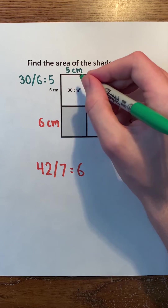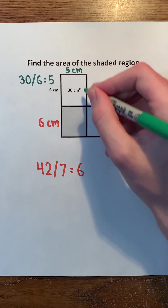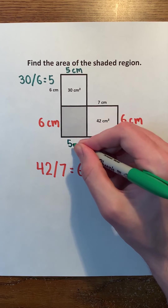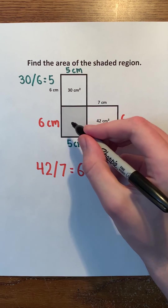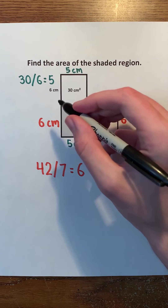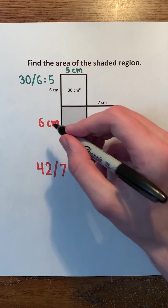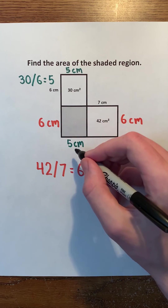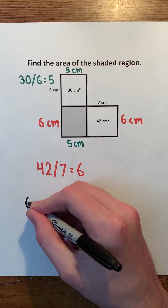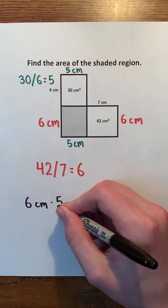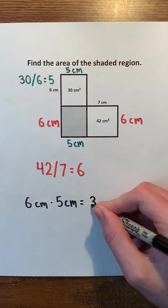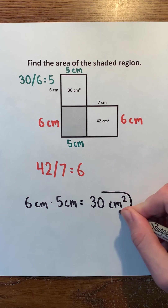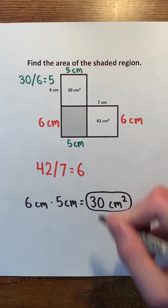5 times 6 is 30. Because this shape is also a rectangle, this side of it must also have a length of 5 centimeters. Because this shaded region is a rectangle, and we know the length of this side, which is 6 centimeters, and the length of this other side, which is 5 centimeters, we can multiply them to find the area of the shaded region. 6 centimeters times 5 centimeters is 30 centimeters squared. So, 30 centimeters squared must be the area of the shaded region.